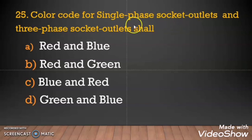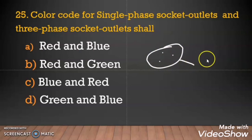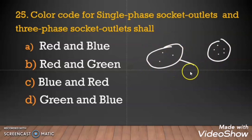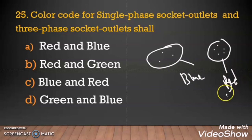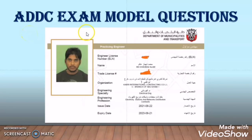Question 25: Color code for single phase socket outlet and three phase socket outlet shall be? As per ADDC regulation, blue is the color code for single phase socket and red is the color code for three phase socket. I hope you enjoyed this video and learned something new. This video will be very helpful for students who are aspirants for the ADDC exam. Please subscribe to my channel, give a thumbs up, and share with your friends. Take care, keep learning, bye bye, thank you.